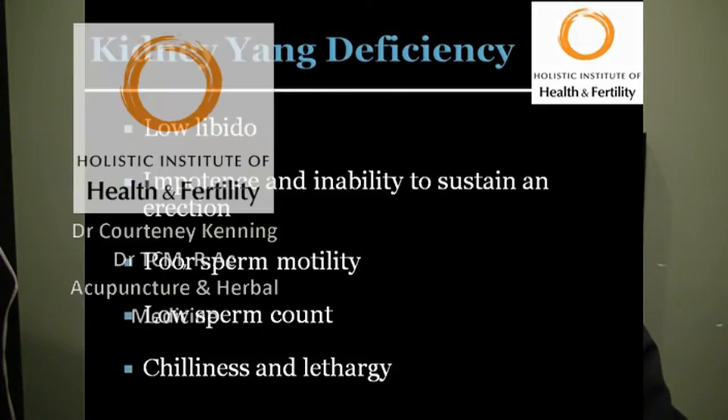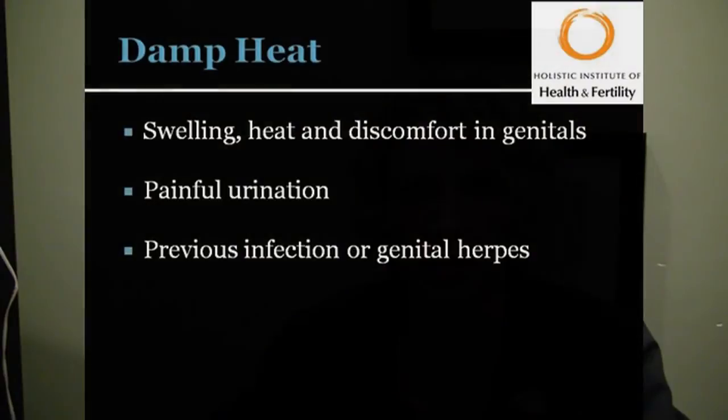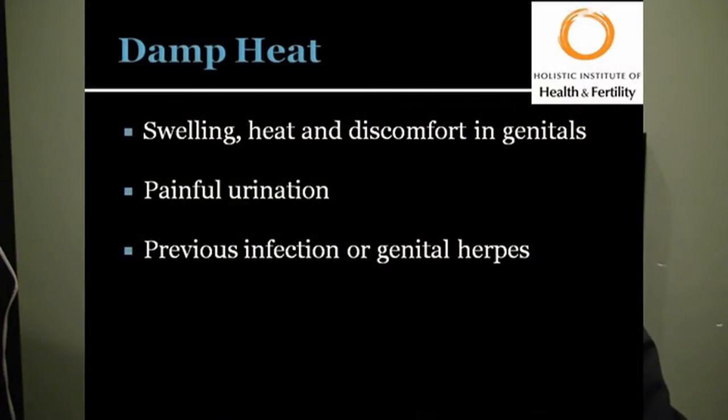The next one is damp heat. Usually that person will have swelling, heat, and discomfort in the genitals, painful urination, and often they'd have some previous infection like herpes or STDs, or just maybe a rash down there. Damp heat can be caused by a poor diet and overconsumption of alcohol.